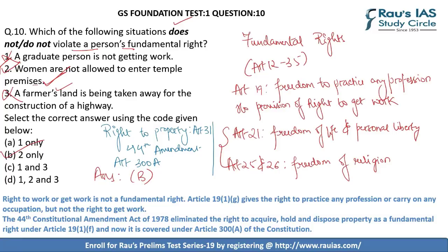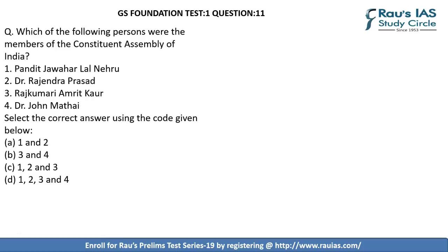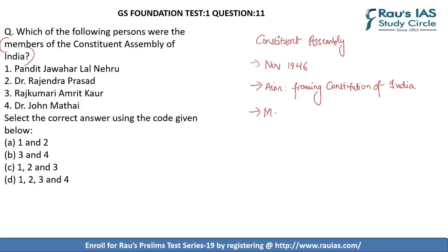Question 11 asks which among four personalities were members of the Constituent Assembly of India. The Constituent Assembly was constituted in November 1946 to frame the constitution of India and consisted of many major and minor committees. Pandit Jawaharlal Nehru, Dr. Rajendra Prasad, Rajkumari Amrit Kaur, and Dr. John Mathai were all members of the Constituent Assembly. Hence option B — 1, 2, 3, and 4 — is correct.